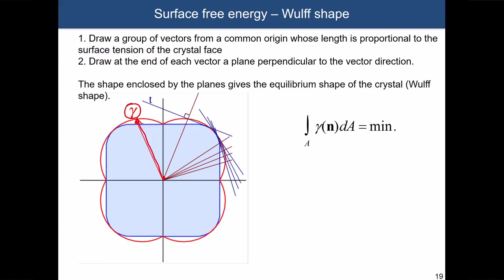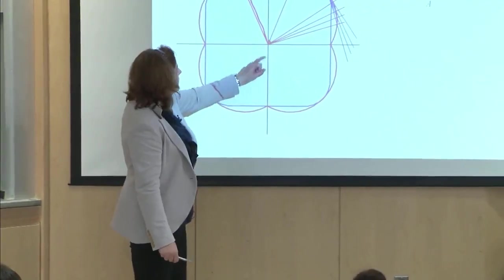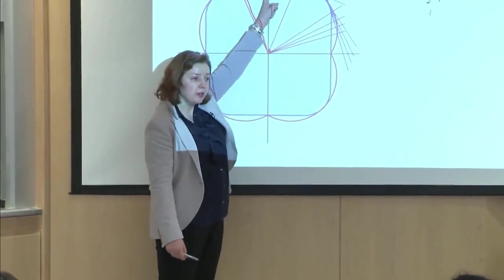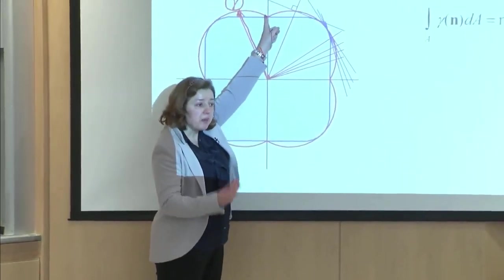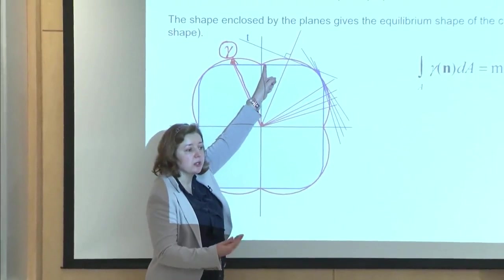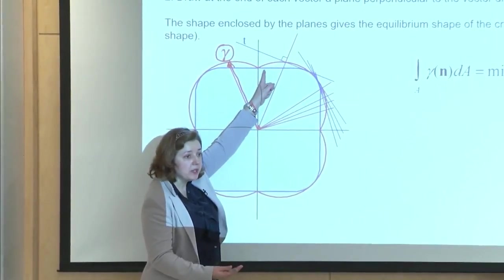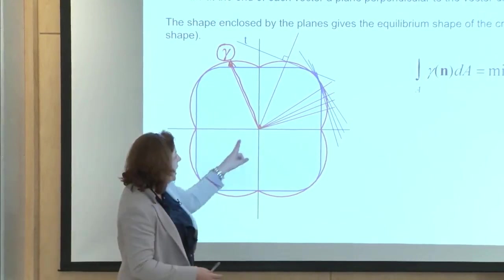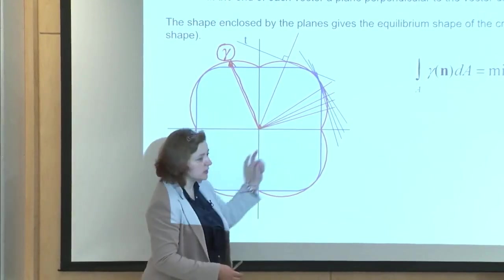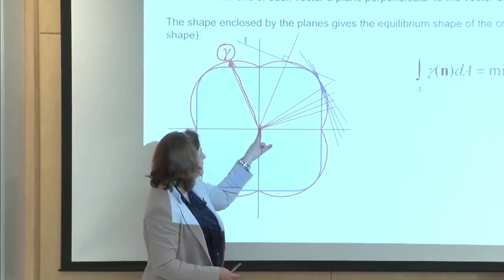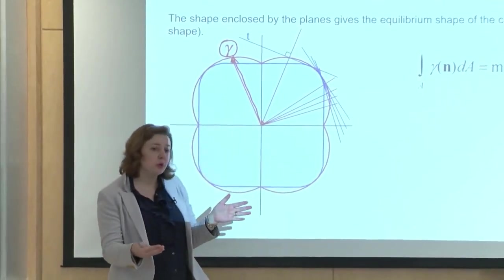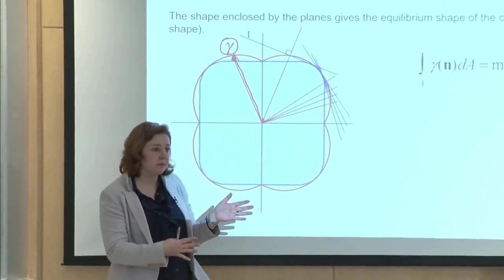If this was an FCC crystal and you were to plot, for example, the 001 direction, then the length between the center and that point would be the magnitude of the surface energy for that particular plane. And then if you're plotting for the 111 or 110 plane, the distance between the center and that point would simply indicate what is the magnitude of the surface energy for that given plane.